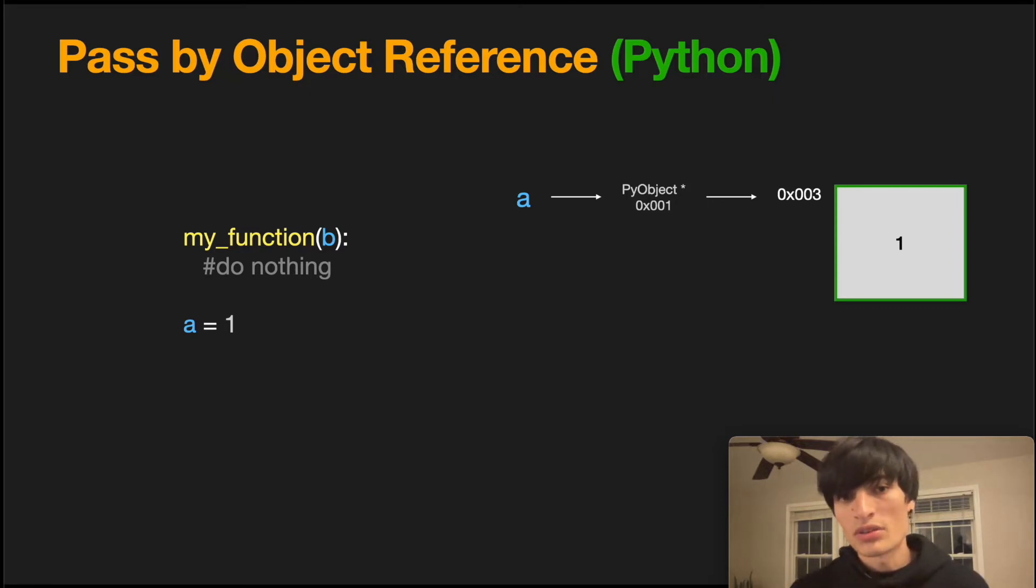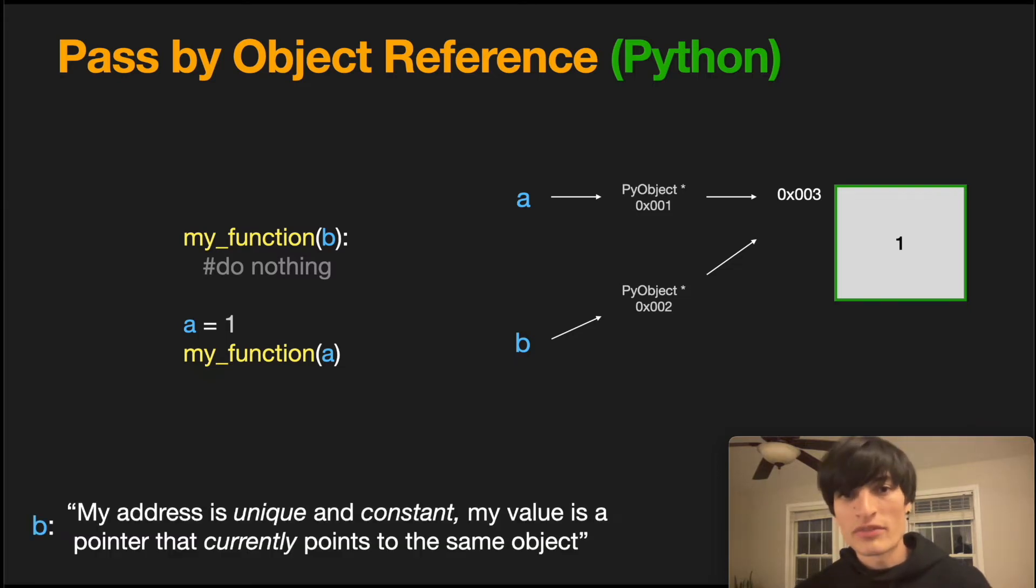Here you see the same program, but what you may notice is very unique in that variable a now instead holds a pointer, not an address that holds value. Likewise, when my function is called variable b is created, which points to an address that holds another pointer. Essentially what variable b is saying is my address is unique and constant. My value is a pointer that currently points to the same object.